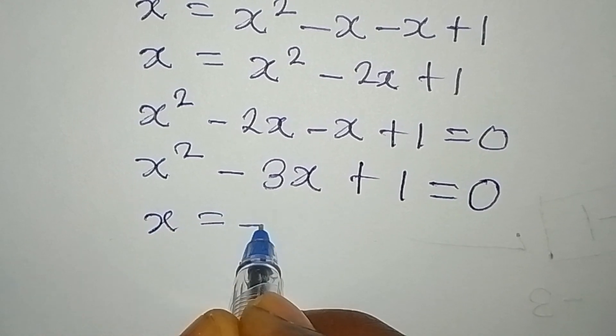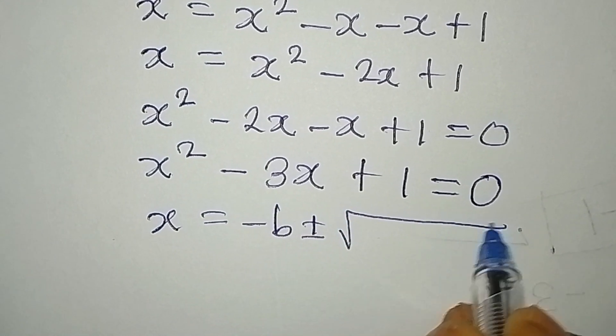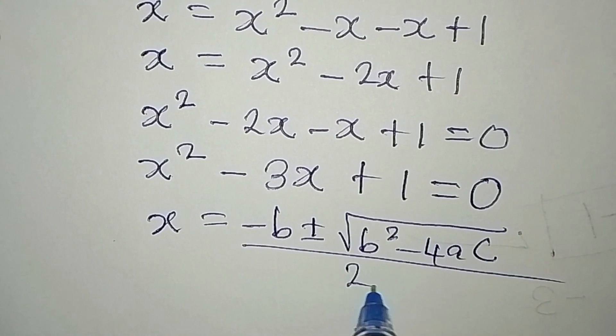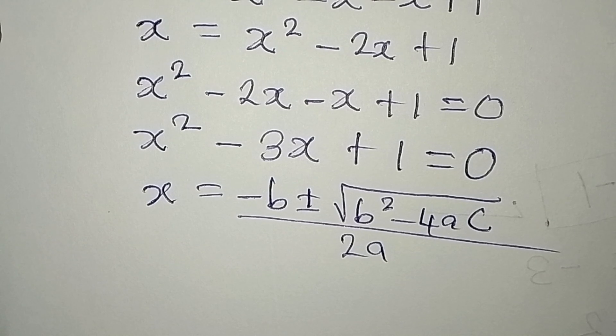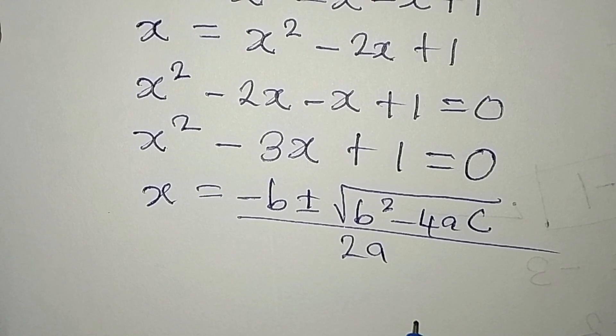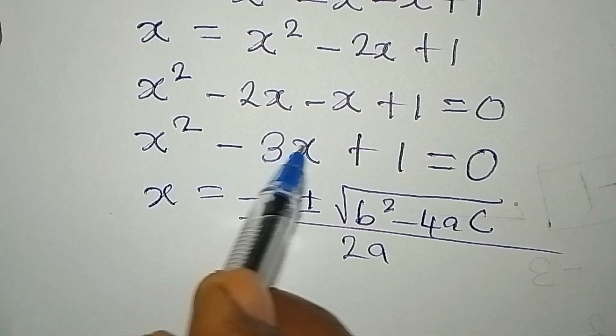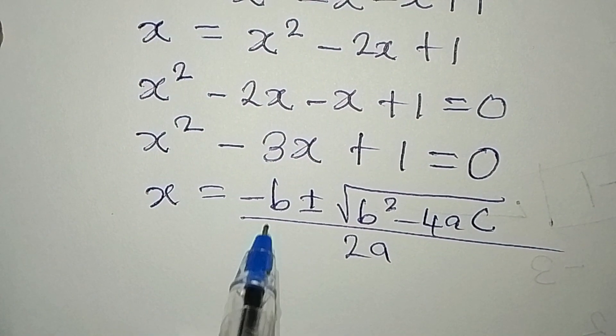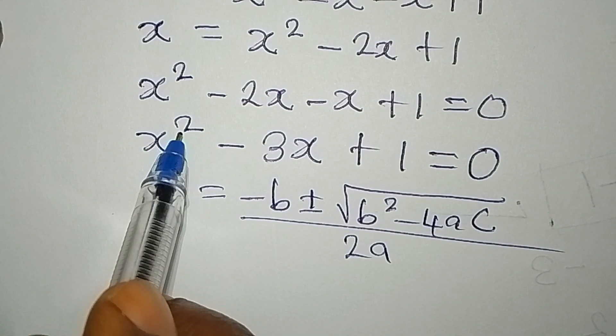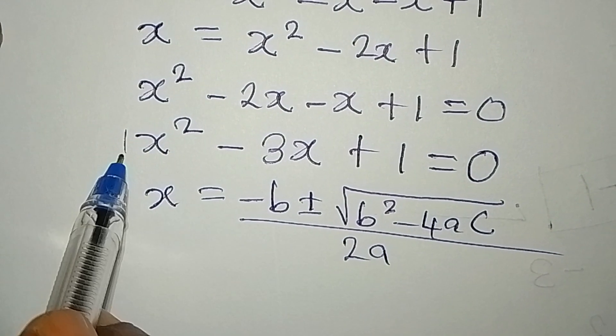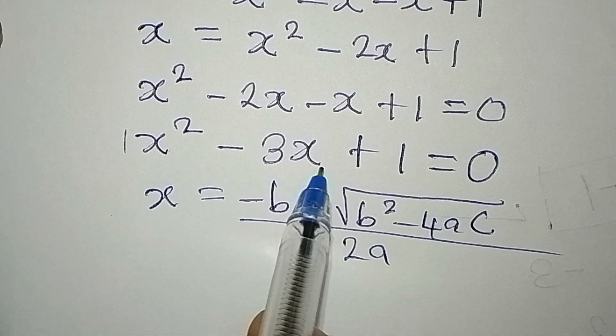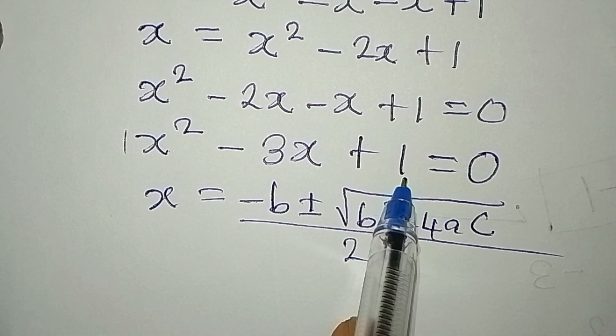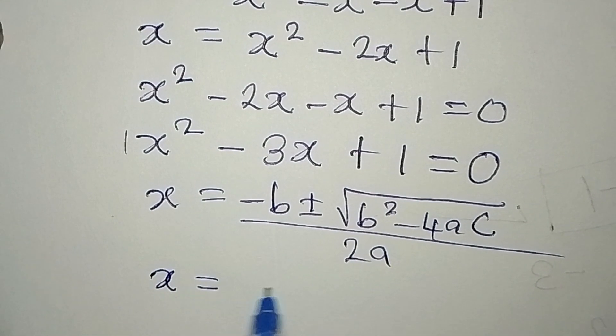x is equal to minus b plus or minus square root of b squared minus 4ac all over 2 times a. Now, I'm using x because it is the x we are looking for in the quadratic equation. And now, what is our a? a is the coefficient of x squared. Remember, there's an invisible one over here. So our a is 1. Our b is minus 3. And c is constant, which is plus 1.